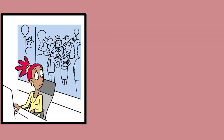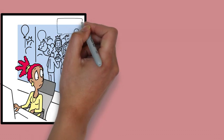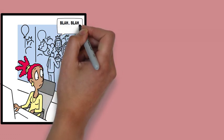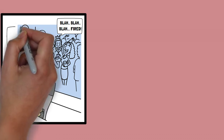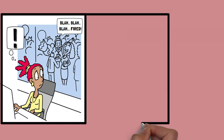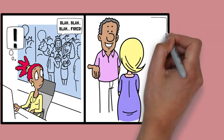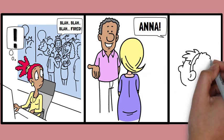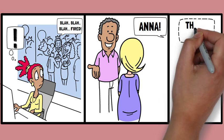The cocktail party effect is when you hear your name or a significant word in a noisy environment even when you're not actively listening to those conversations. Treisman's theory explains this by suggesting that although the irrelevant information is attenuated, it is still processed. At a crowded party, your brain's attenuator still processes the mention of your name at a lower level, making it noticeable enough for you to catch it.